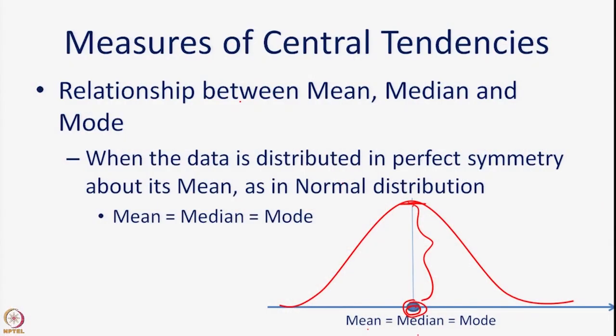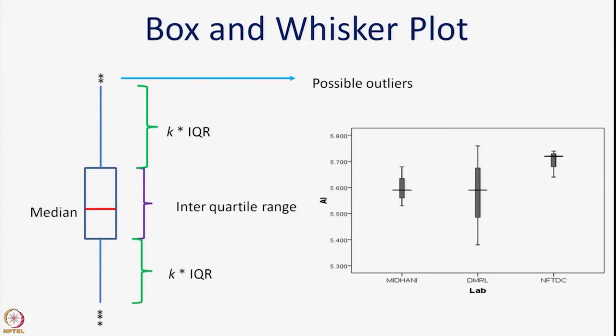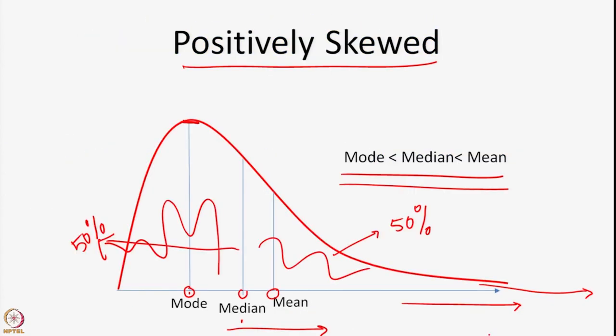To summarize the relationship between mean, median, and mode: for a symmetric distribution, mean equals median equals mode. If positively skewed, mode is less than median, which is less than mean. If negatively skewed, mean is less than median, which is less than mode.